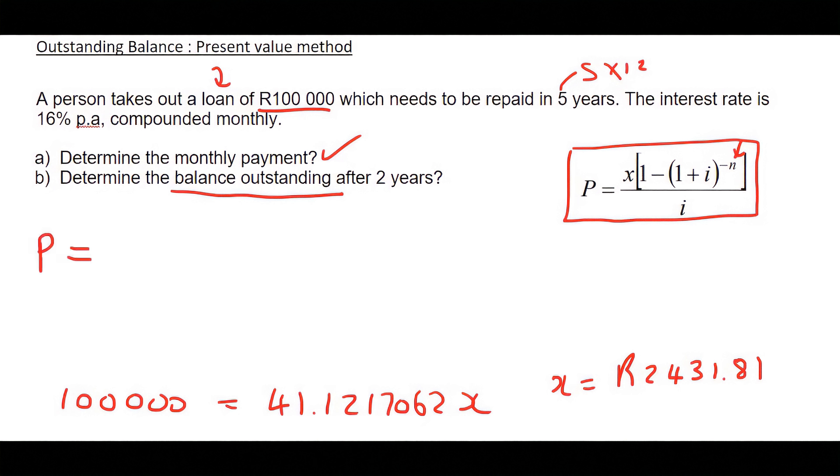Okay, so what we do is we go say P equals to. Now, we can use our monthly payment that we've calculated in the previous question. And then the interest rate is 16%. That all stays the same.